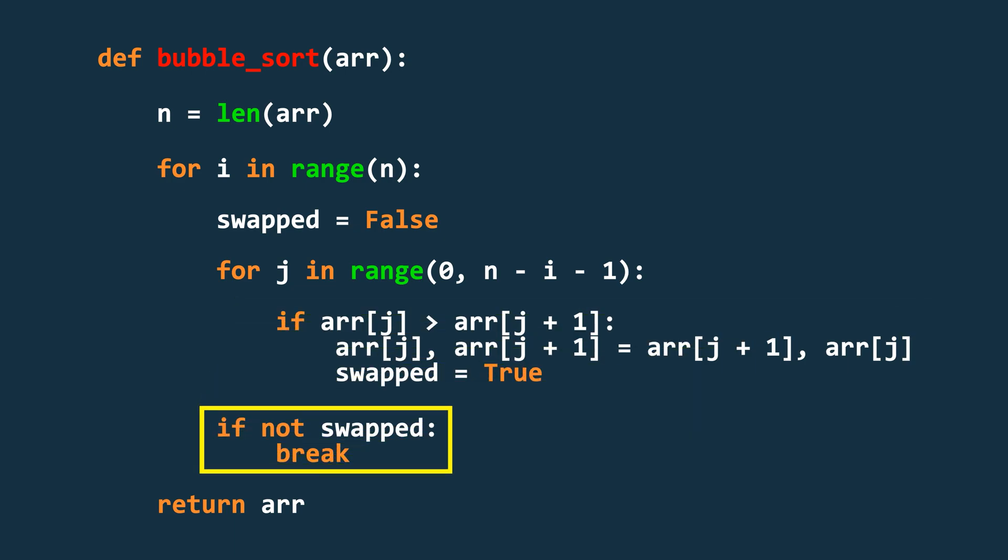If after a complete pass, no swapping was done, it means the array is already sorted, so we break out of the loop early.